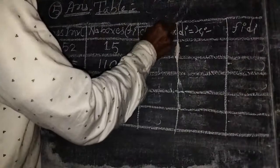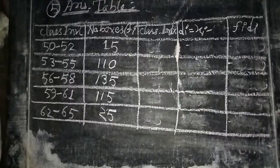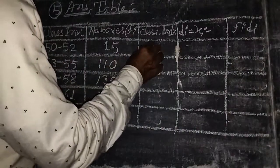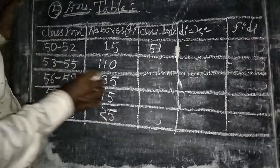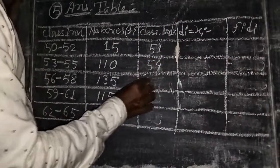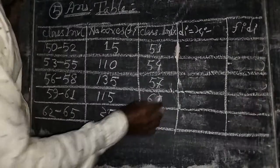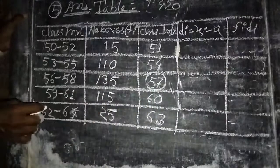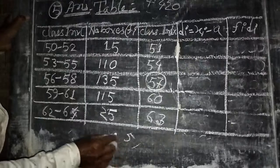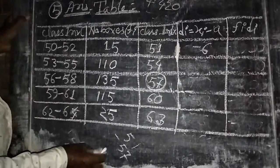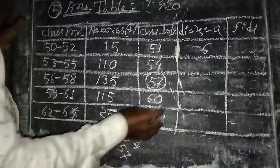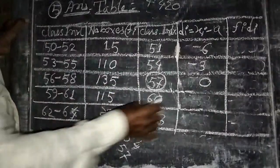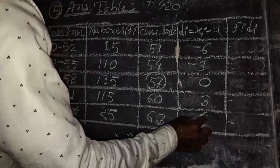The class midpoints (xi) are calculated: for 50 to 52, the midpoint is 51; similarly 54, 57, 60, and 63. The assumed mean a is taken as 57. Then di equals xi minus a: for xi = 51, d = 51 minus 57 = minus 6; for xi = 54, d = minus 3; for xi = 57, d = 0; for xi = 60, d = 3; for xi = 63, d = 6.